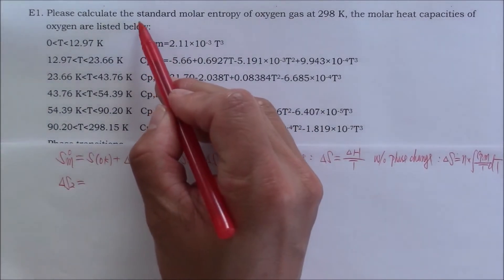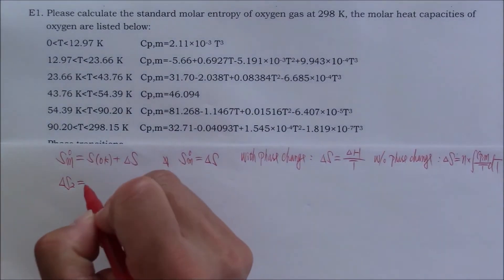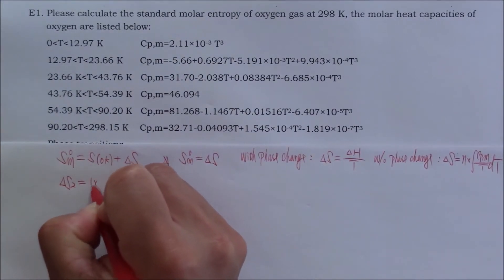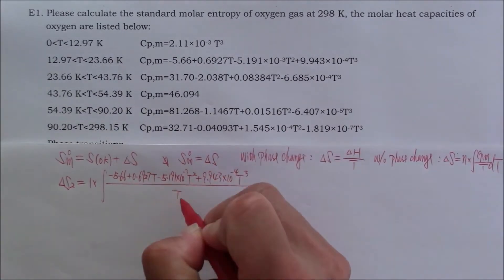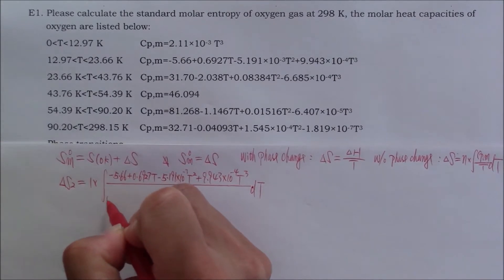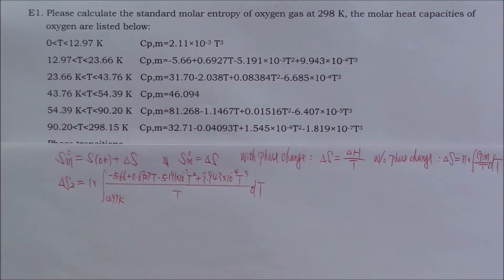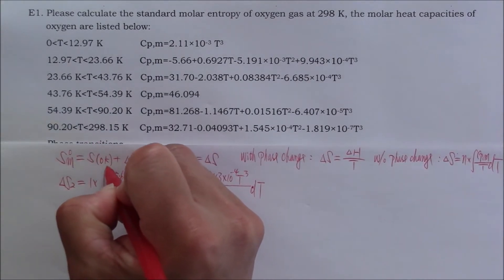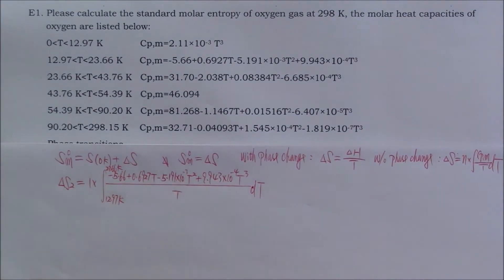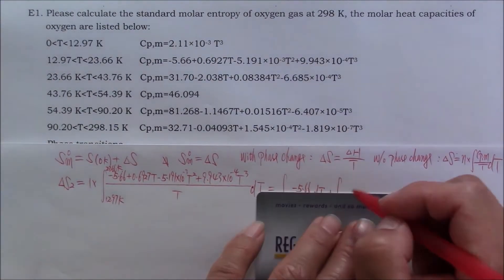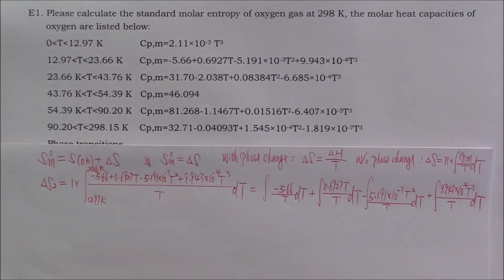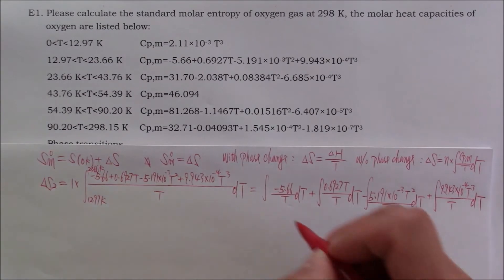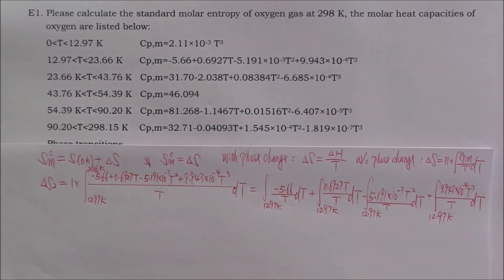Because the standard molar entropy is for one mole of substance, therefore, N is equal to one. We use one multiply integration. The initial temperature of this integration is 12.97 Kelvin, and the final temperature is 23.66 Kelvin. Because it has four terms, therefore, we need to have four separate integrations. The initial temperatures are the same for all four integrations.